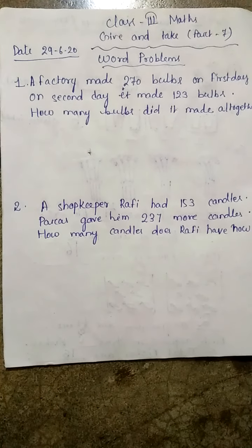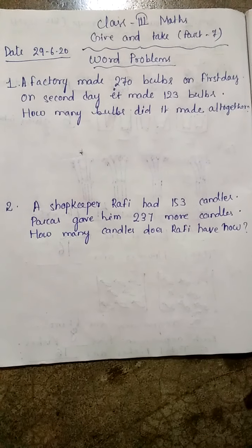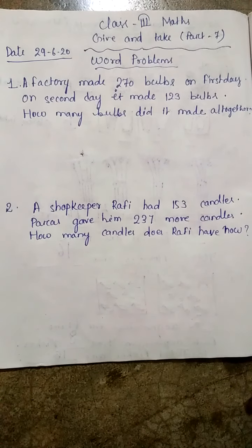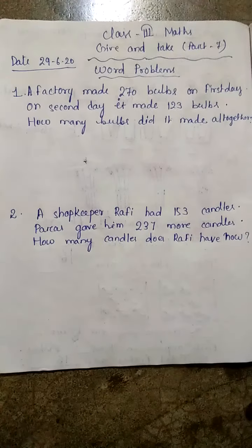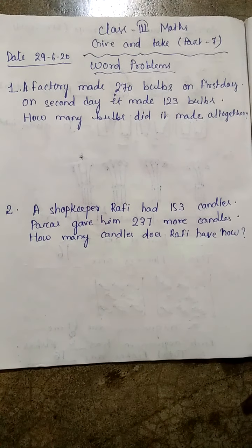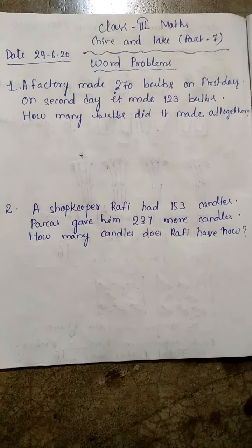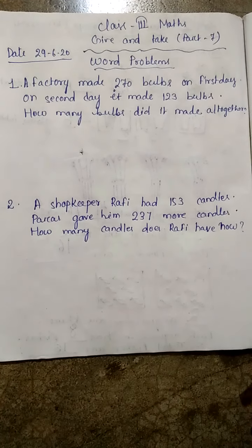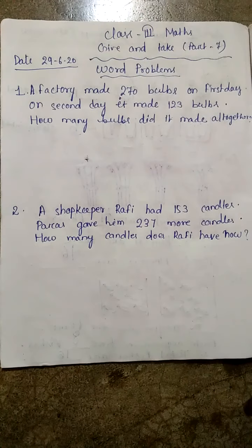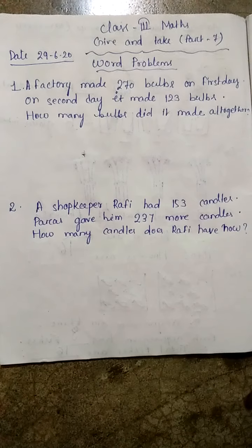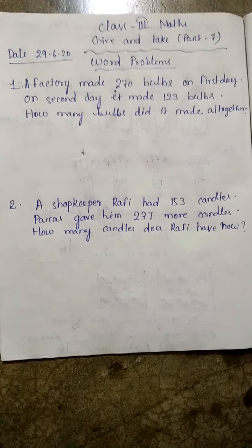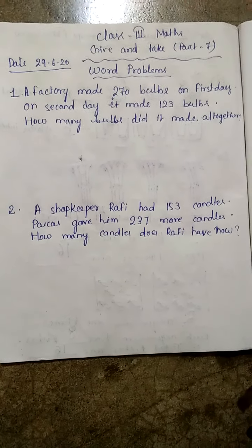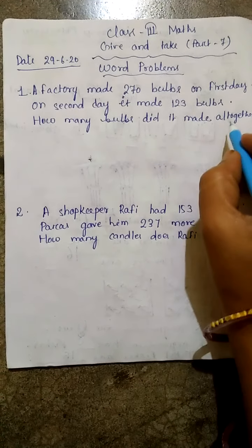बच्चों, यहां पर देखिए, Question No. 1, जो कि आपके book का ही है। तो यहां पर लिखा गया है कि: A factory made 270 bulbs on the first day. On the second day, it made 123 bulbs. How many bulbs did it make altogether? तो बच्चों, सोचना है हम लोगों को कि factory ने पहले दिन 270 bulbs बनाए हैं, लेकिन दूसरे दिन 123 bulbs बनाए हैं। How many bulbs made altogether?